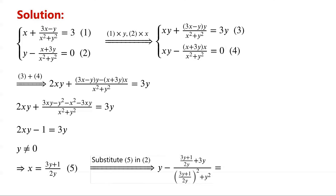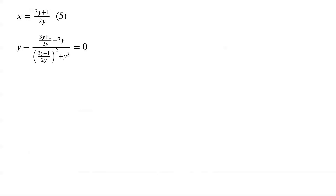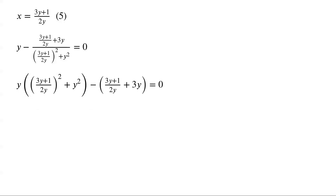Substituting equation 5 into equation 2, we have: y minus (3y plus 1)/(2y) plus 3y, over ((3y plus 1)/(2y)) squared plus y squared equals 0. Multiplying the equation by ((3y plus 1)/(2y)) squared plus y squared, we get: y·[((3y plus 1)/(2y)) squared plus y squared] minus (3y plus 1)/(2y) plus 3y equals 0.